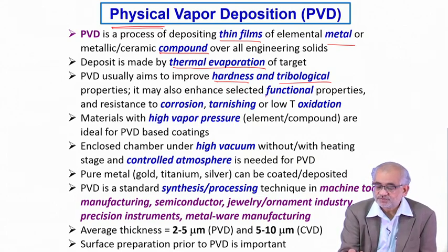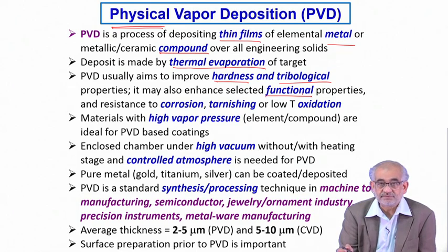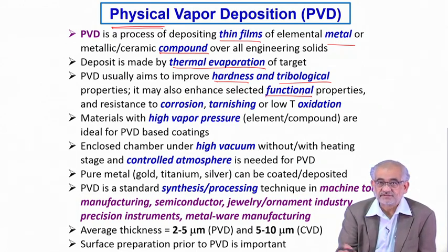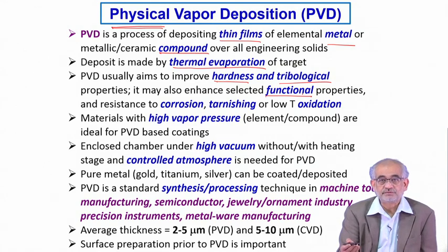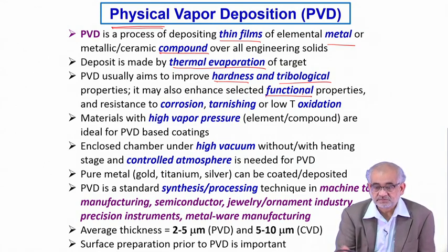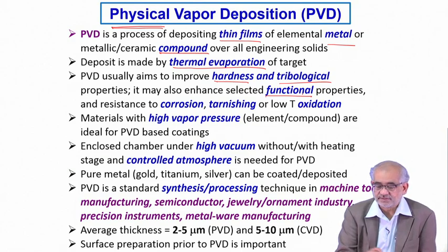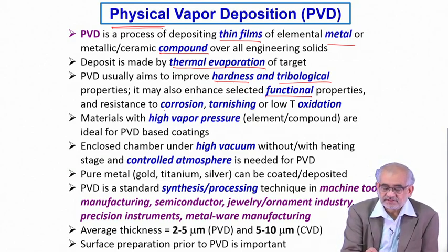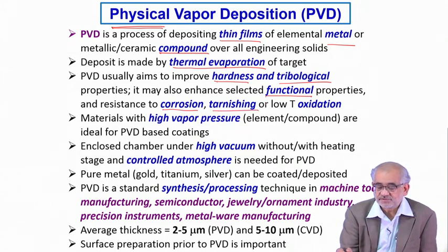There could also be utilities based on improvement of functional properties, which can be anything from conductivity to reflectivity, to make it amenable to various kinds of other functional applications. Similarly, this can also impart resistance to corrosion, resistance to tarnishing, room temperature degradation, or even against oxidation.